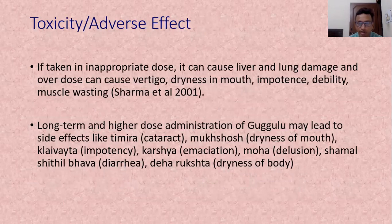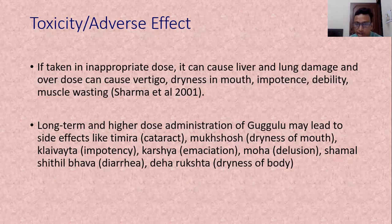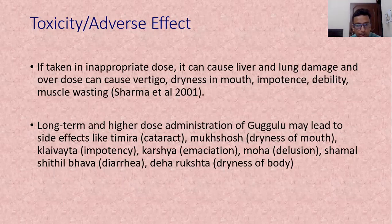Regarding toxicity and adverse effects: if Gugul is taken in inappropriate doses, it can cause liver and lung damage. In overdose, it may cause vertigo, dryness of mouth, impotency, debilitation and muscle wasting. According to another study, long-term and high-dose administration of Gugul may lead to side effects like Timira or cataract, Mukha shosha or dryness of mouth, Klaibya or impotency, Karsha or emaciation, Moha, Samhal-Shitala Bhava or diarrhea, and Deha-rukshata or dryness of body.